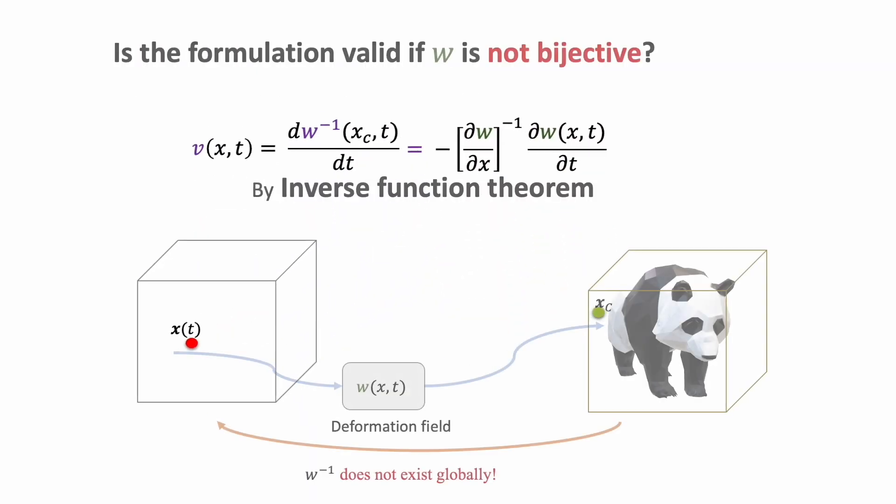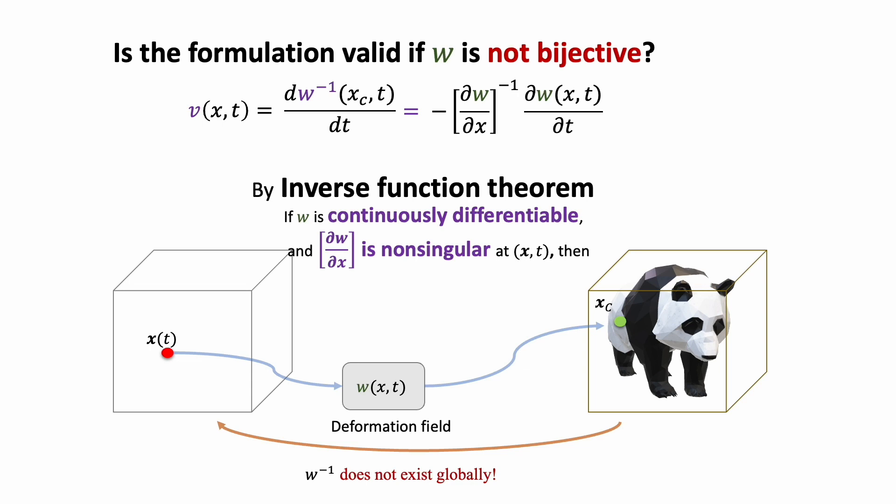Our formulation is general and remains valid even if the inverse of the deformation field does not exist globally for every spacetime point. This is because our derivation is based on the well-known inverse function theorem, which guarantees the validity as long as a local diffeomorphism exists between the local neighborhood of any spacetime point and its corresponding image in the canonical frame.